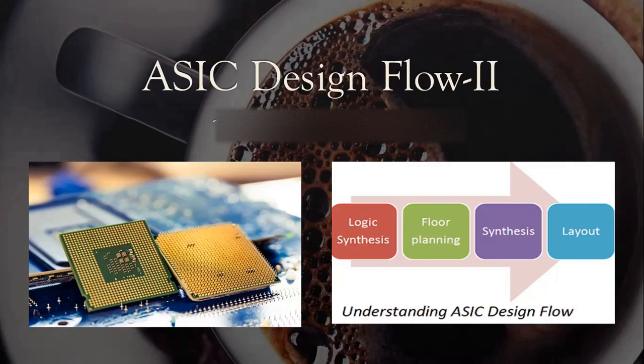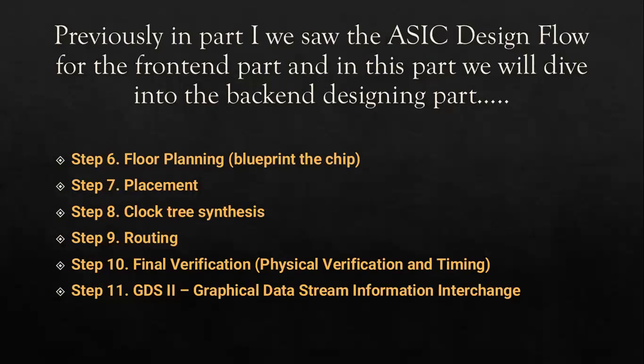I request you to visit the previous video on ASIC design flow part one, which will give you a better picture before continuing with this video about the backend design part. In this video we will be talking about the backend designing part from step 6 to step 11: floor planning, placement, clock tree synthesis, routing, final verification, and the GDSII information interchange file.